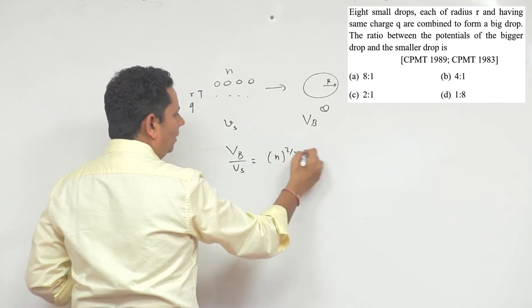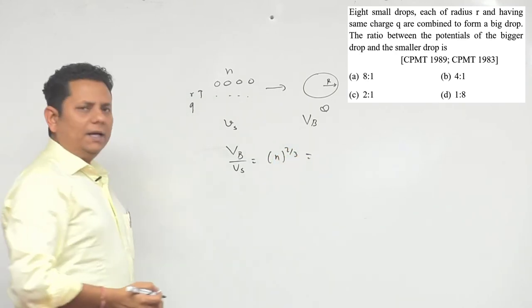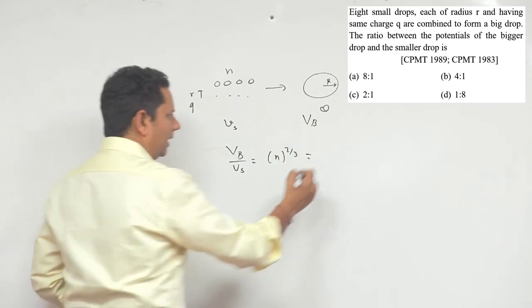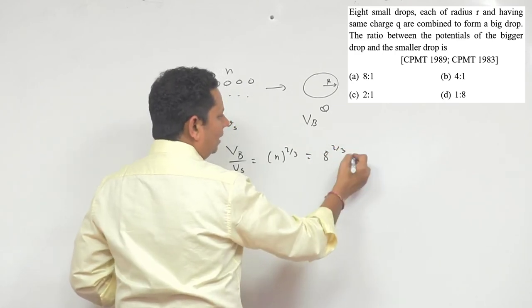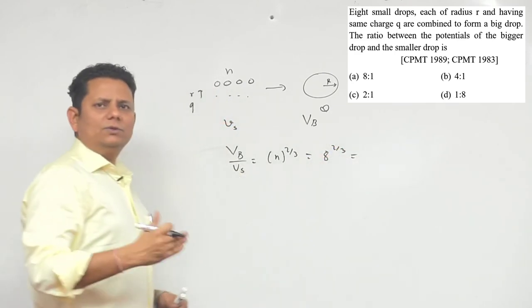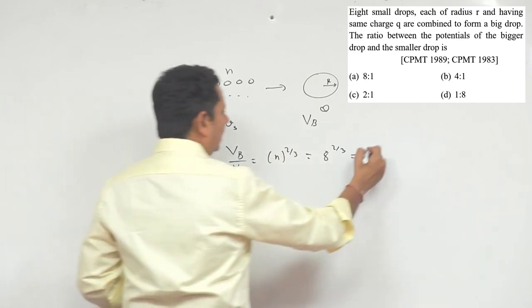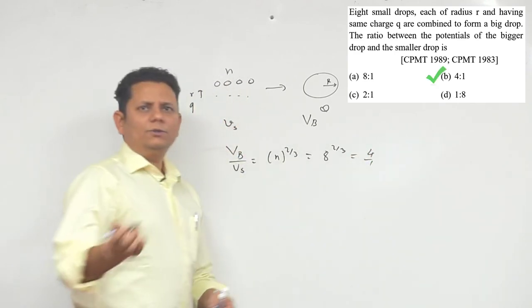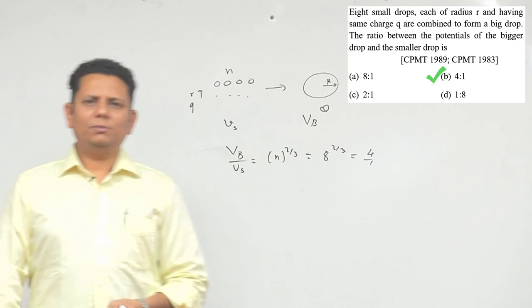We're given n equals 8. So 8 to the power 2/3: first we take the cube root of 8 which gives 2, then we square it to get 4. The ratio is 4:1, so based on this, option b would be the right answer.